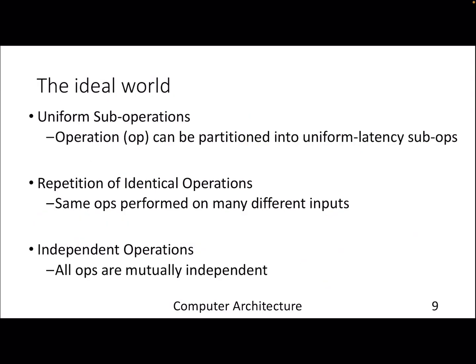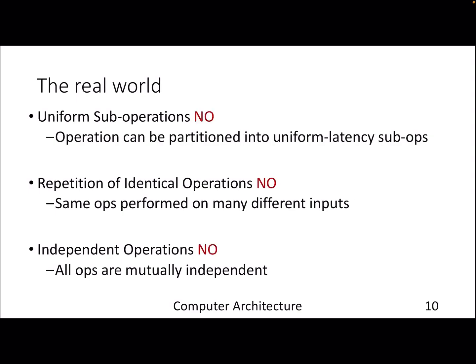So far we have assumed everything is going well: operations are uniformly distributed across stages, repeated operations of the same kind with different data, and all operations are independent — no dependency between a load and a branch, for example. But in reality, these assumptions won't hold true all the time. We will see those hazard-related issues in the next video.